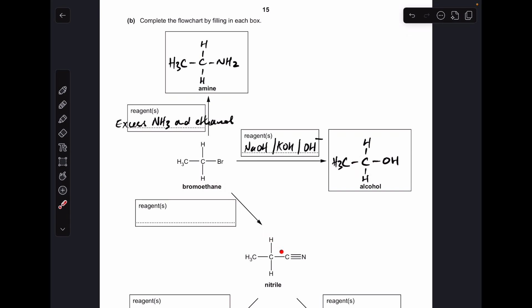Now this conversion—haloalkane to a nitrile. To do that you just need a source of cyanide ions, so something like potassium cyanide or sodium cyanide, but it has to be in ethanol.